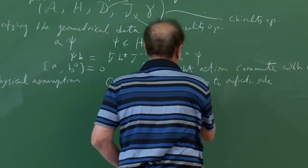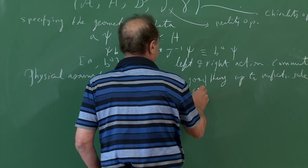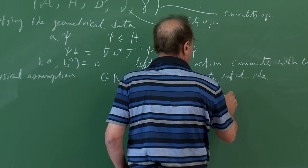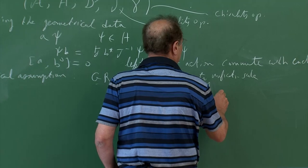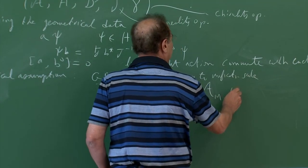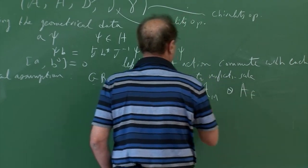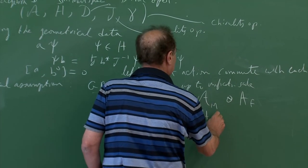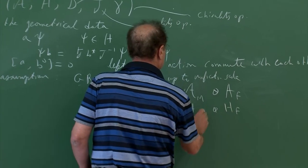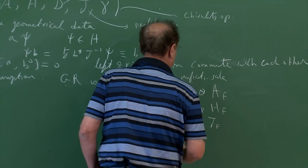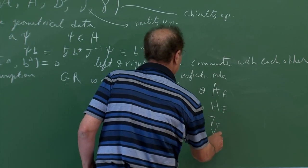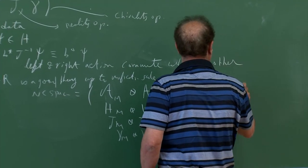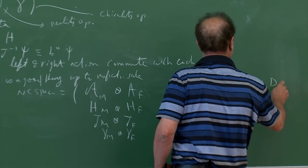We assume that the non-commutative space is a product of M cross finite, H_M cross H_finite, and G_M cross G_finite — a product geometry — and the only non-trivial piece is that D will be D_M cross 1 plus gamma_5 cross D_finite.